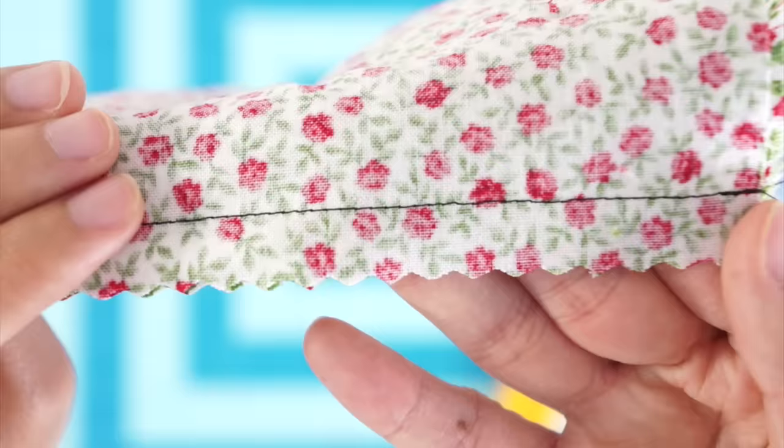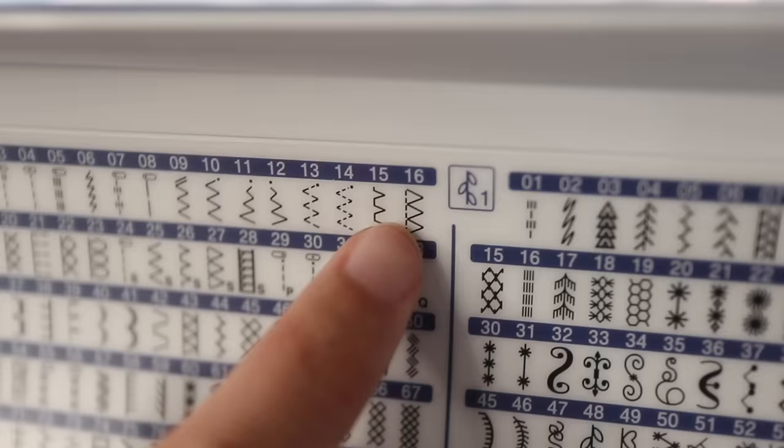To finish off your raw edges, you can either use pinking shears, which creates zigzag edges to keep the fabric from fraying.